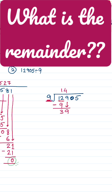...4 is 36, and 9 times 5 is 45, so that's more than 39. We subtract again and we are left with 3. Then we bring down 0, so 9 times 3 is 27. We subtract again and we are left with 3.